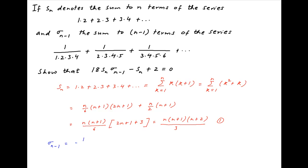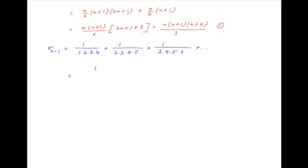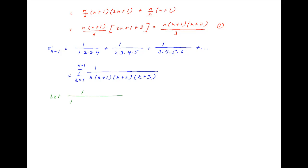Now σ(n−1) is the sum to n−1 terms of the series 1/[1·2·3·4] + 1/[2·3·4·5] + and so on. The general term here is 1/[k(k+1)(k+2)(k+3)], and so σ(n−1) equals the summation of this general term where k varies from 1 to n−1.